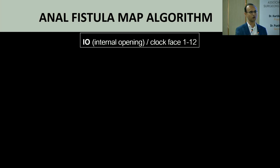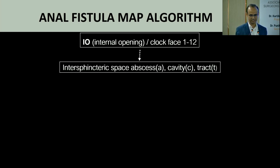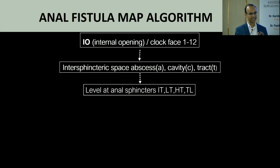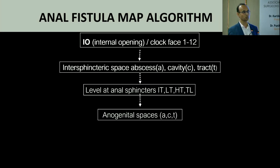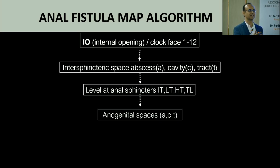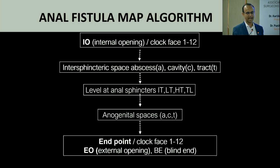Using the map, the internal opening is plotted on a clockwise 1-to-12 clock face. We can appreciate the intrasphincteric space, decide whether to drain or perform fistulotomy, and if it is high transsphincteric, a sphincter-preserving approach is chosen; otherwise sphincter-cutting applies. If the radiologist clearly states which anogenital space is involved — for example, the infra-elevator space — it directly influences whether to drain it. This simple map helps us understand what the radiologist is conveying.